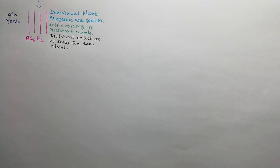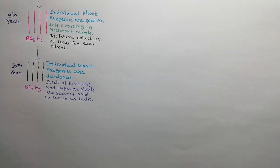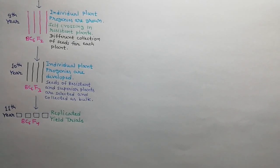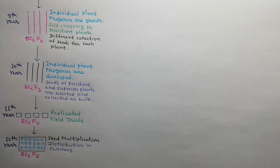In the ninth year, BC6 generation is raised by growing individual plant progenies, resistant plants are self-pollinated, and seeds are collected from each plant separately. In the tenth year, BC6 generation is raised by growing individual plant progenies, and seeds from resistant and superior plants are mixed as a bulk. In the eleventh year, BC6 generation is raised and replicated yield trials are performed. In the twelfth year, BC6 generation is raised for multiplication of seeds, which are then distributed to farmers.